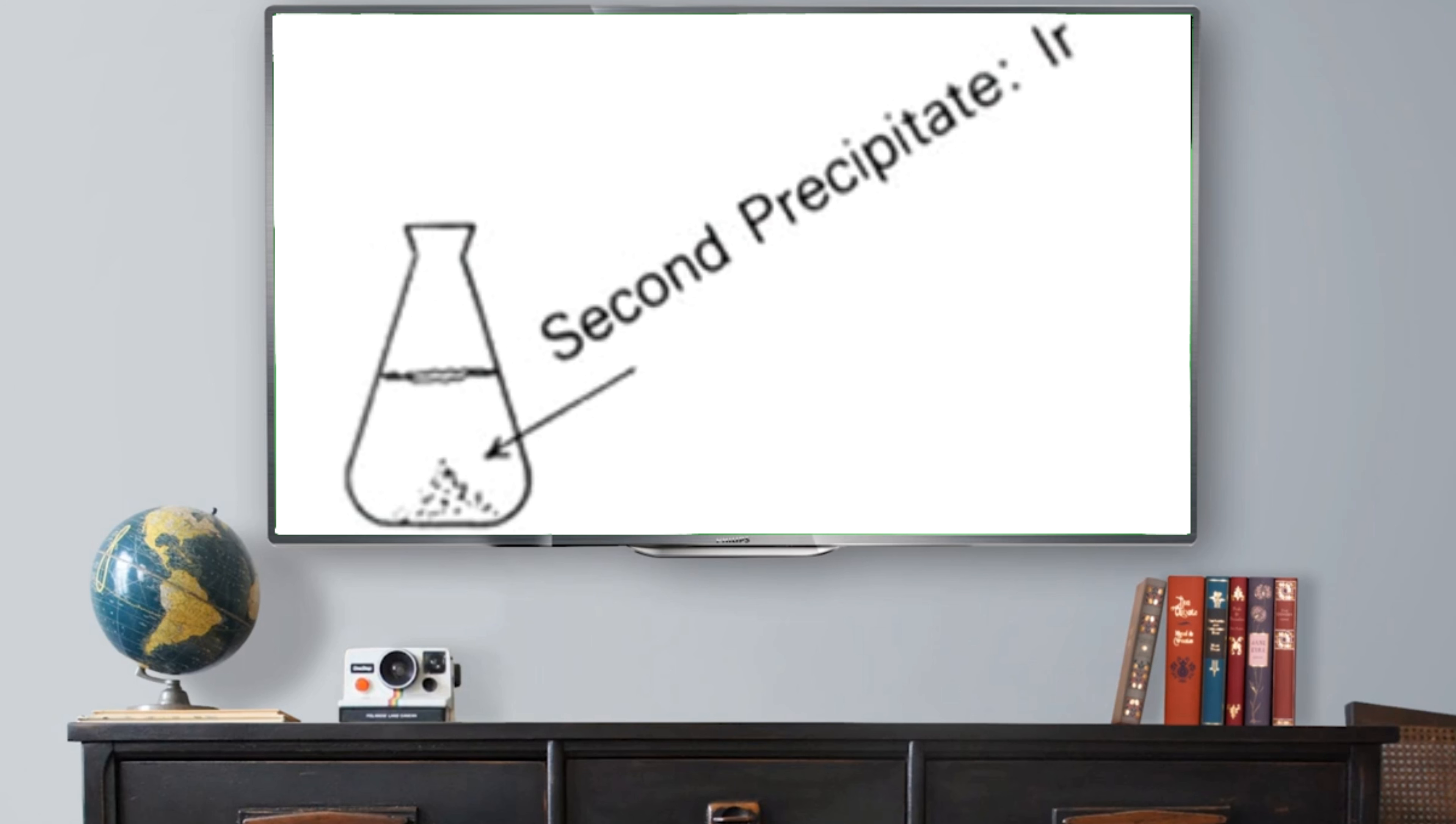The provided text appears to be a detailed procedure for separating platinum and iridium from a solution containing various contaminants. It involves several steps including precipitation, filtration, washing, and chemical treatments using substances like ammonium chloride and aqua regia. This method aims to obtain nearly pure platinum and iridium separately.